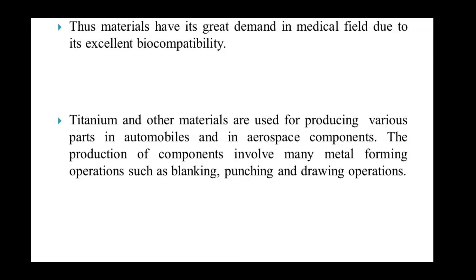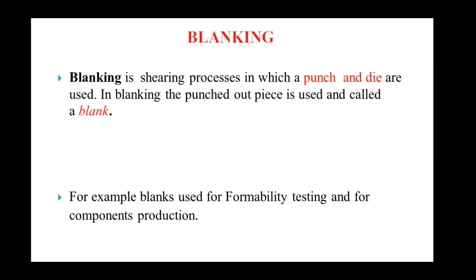What is the blanking process? Blanking is a shearing process in which a punch and die are used. Please concentrate on this point — punch and die are very important equipment. A sheet metal is taken, kept on the die, and the punch, which is fitted in the press, comes down and presses the sheet metal, goes inside it, and a piece of the sheet metal is removed. This punched-out piece is called a blank, and the process is called blanking.